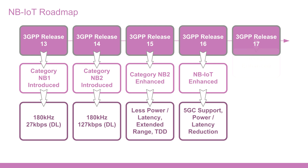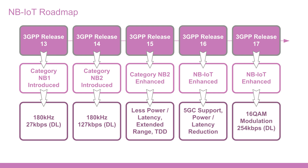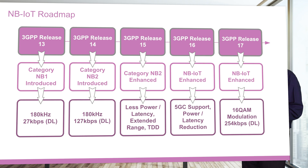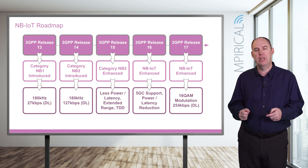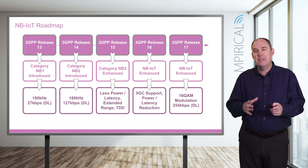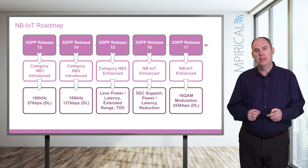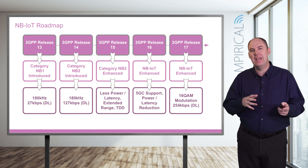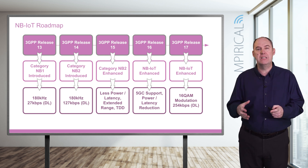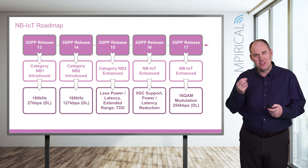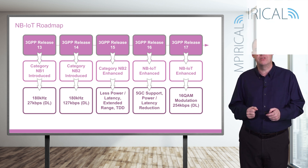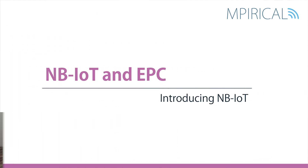In Release 17, continuing the enhancements theme, the key enhancement to focus on is the inclusion of 16QAM — 16 Quadrature Amplitude Modulation — which boosted the data rate up to approximately 250 kilobits per second. This is just a summary of some of the key highlights associated with those releases, but if you look at the specifications there's a lot more detail in there.